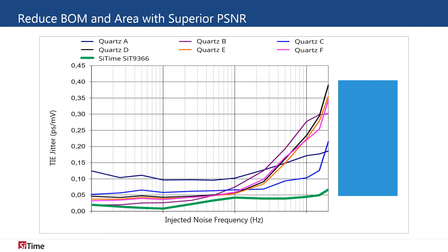The full portfolio of SciTime's differential oscillators has exemplary power supply noise rejection as well. The SIT9366 has three times better PSNR than similar quartz devices. The superior PSNR of SciTime's differential oscillators makes designing the power supply filter easier for engineers, reduces the number of supporting devices needed, and therefore reduces the necessary space on the already area-constrained optical module.